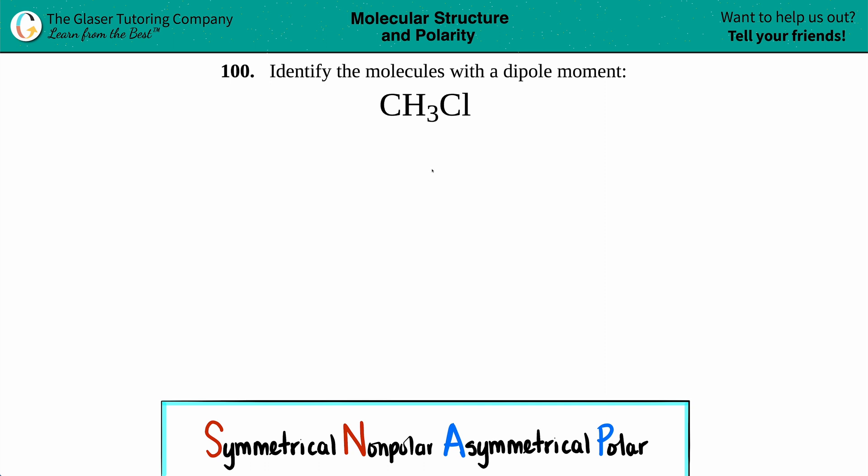Number 100: identify the molecules with a dipole moment, and we have CH3Cl. Does CH3Cl have a dipole moment? Well, let's figure it out. What is a dipole moment? A dipole moment is basically when your molecule as a whole has an unequal pull of electrons to one side.